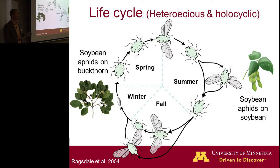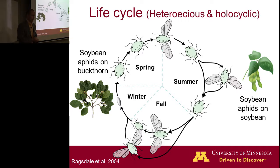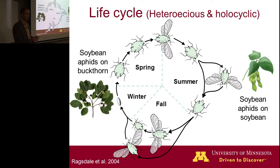In summer, they go through maybe thirteen to fifteen asexual generations on soybean plants. As plants get overcrowded or plant quality decreases, these aphids can produce winged offspring that redistribute within or to other fields. There's no need for mating — they're all females. The only time we have males is later in the season. They're reproducing machines with telescoping generations, so the offspring are born pregnant. In the fall, as soybeans begin to senesce, aphids migrate back to buckthorn, where males and females are produced, sexual reproduction occurs, and females lay eggs under the buds of buckthorn to overwinter.